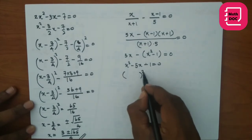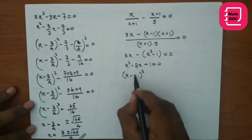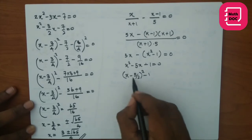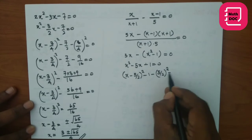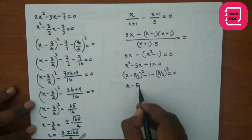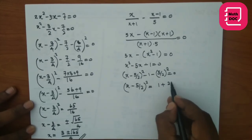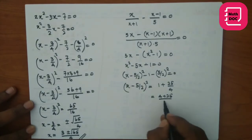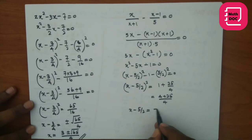From here apply the complete square method. Write the perfect square: write x, divide the x coefficient by 2, keep the constant, and subtract (5/2)². Simplifying: (x - 5/2)² = 1 + 25/4, which is (4 + 25)/4 = 29/4. Then x - 5/2 = ±√29/2, giving x = 5/2 ± √29/2.